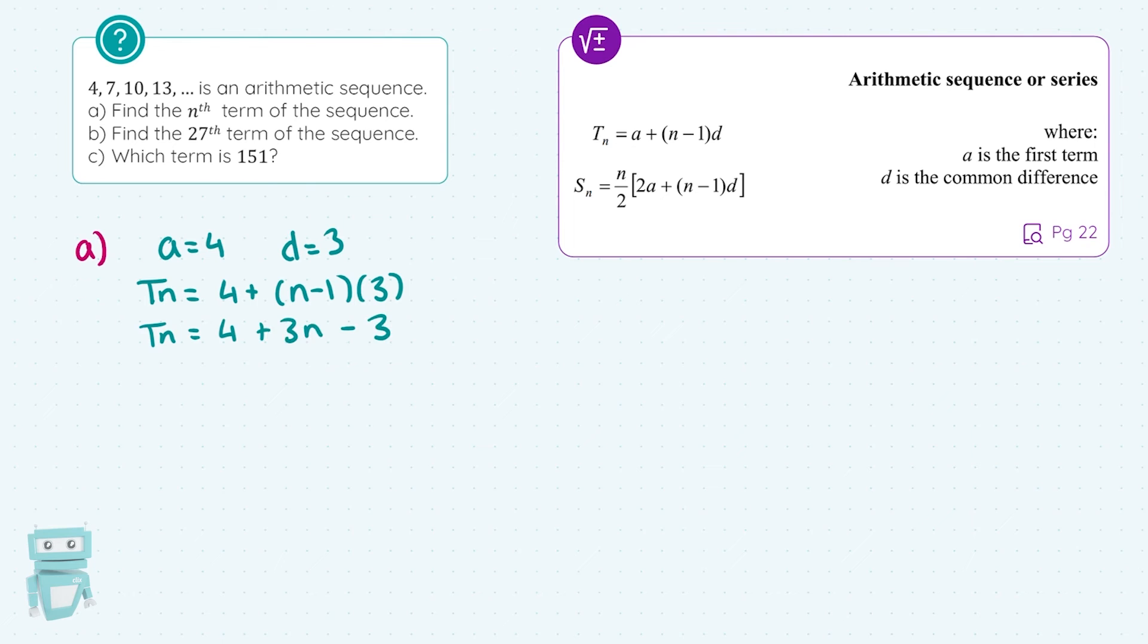We get TN equals 3N plus 1. We'll move on to part B where we're asked to find the 27th term of this sequence. So what I'm going to do is I have to find T27. So wherever there's an N, N is your term number in the sequence. I'm going to substitute in 27 for that. And I get 82. So I know the 27th term here equals 82.